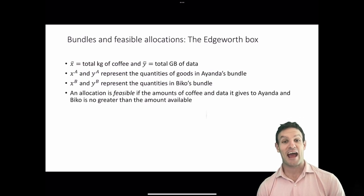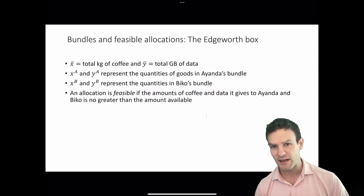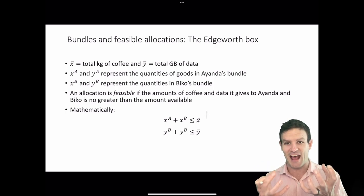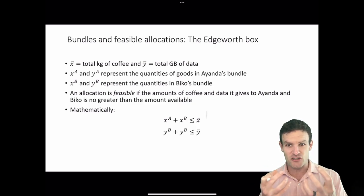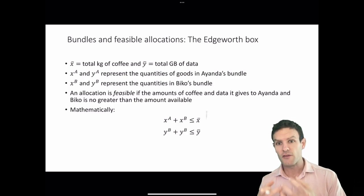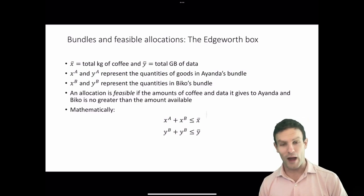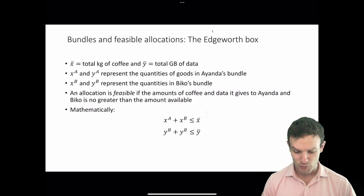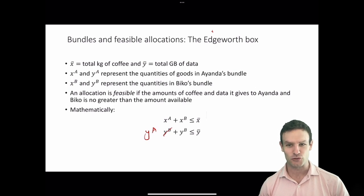We say that an allocation is feasible — it's possible — if the amount of coffee and data it gives to Ayanda and Bicor is no greater than the amount available. So with the two goods x and y, xa plus xb has to be less than or equal to x bar. Similarly for y, ya plus yb must be less than or equal to y bar.